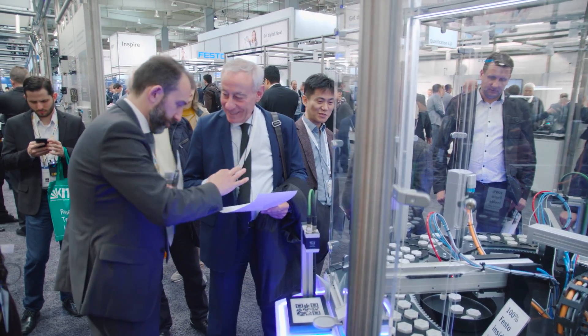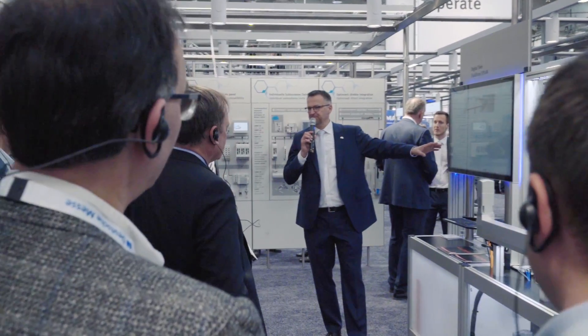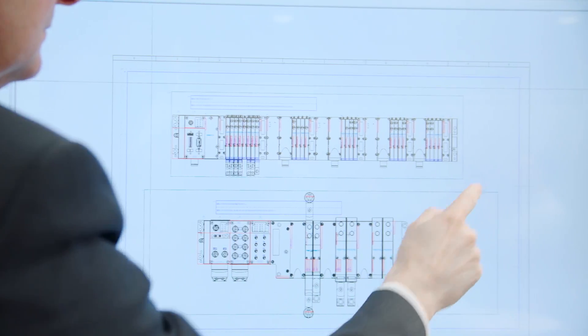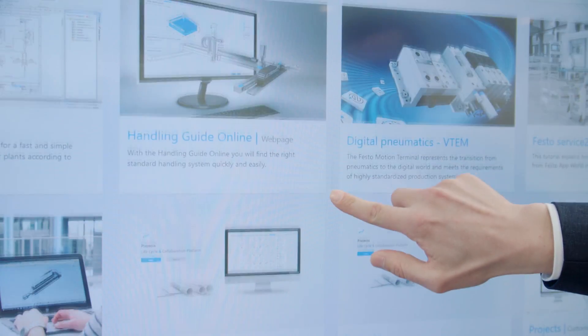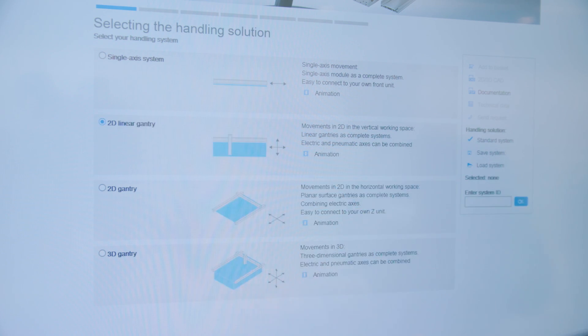We show how machine builders can become even more productive by using digital products and solutions. In engineering, 50% faster to your handling system with the Handling Guide Online.